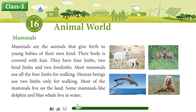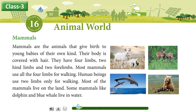Mammals. Mammals are the animals that give birth to young babies of their own kind. Their body is covered with hair. They have four limbs — two hind limbs and two forelimbs. Most mammals use all four limbs for walking. Human beings use two limbs only for walking. Most of the mammals live on the land. Some mammals like dolphin and blue whale live in water.